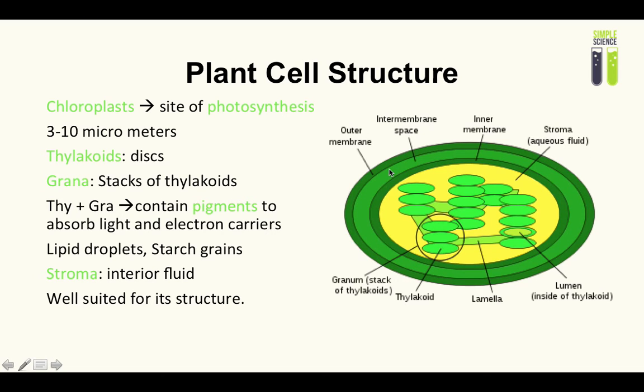Thylakoids are these discs here. Stacking thylakoids makes up this thing called grana, or granum, a stack of thylakoids. They contain pigments which absorb light and electron carriers. During photosynthesis, you need to absorb light, so different pigments absorb different frequencies of light and they're all located in here. This is where the main magic happens in photosynthesis.